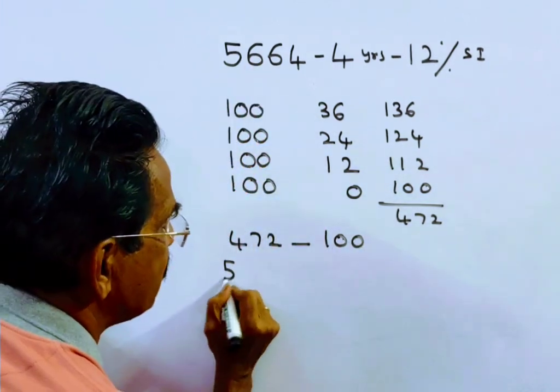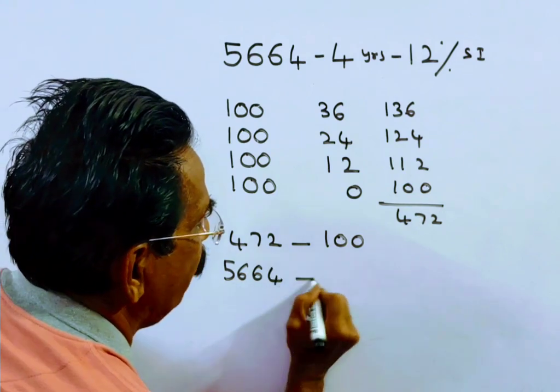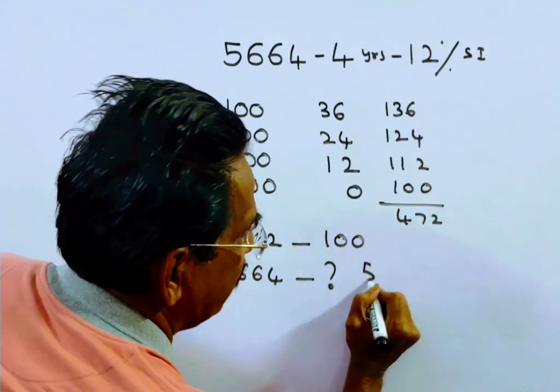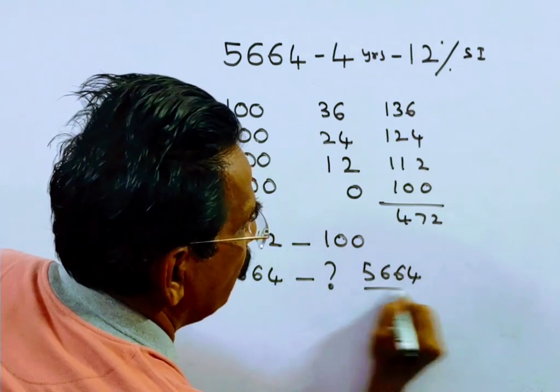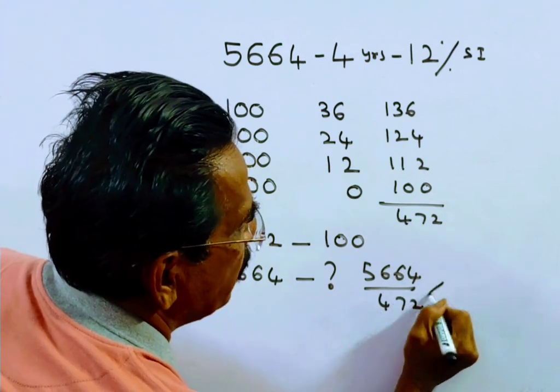Here the debt is 5,664. Then what is the installment? 5,664 over 472 times 100.